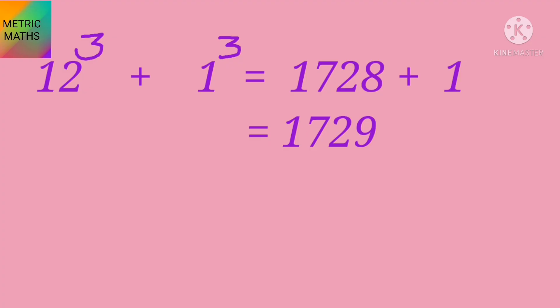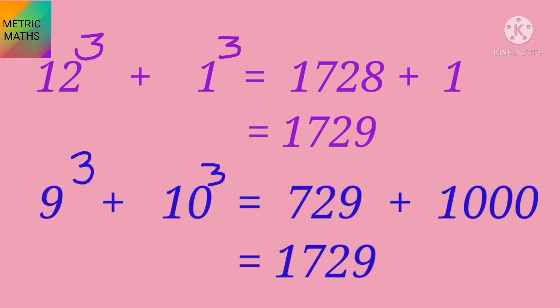Again we can take another set of numbers, that is cube of 9 and 10. 9 cube plus 10 cube. The sum of 9 cube plus 10 cube is equal to 729 plus 1000, that is 1729.